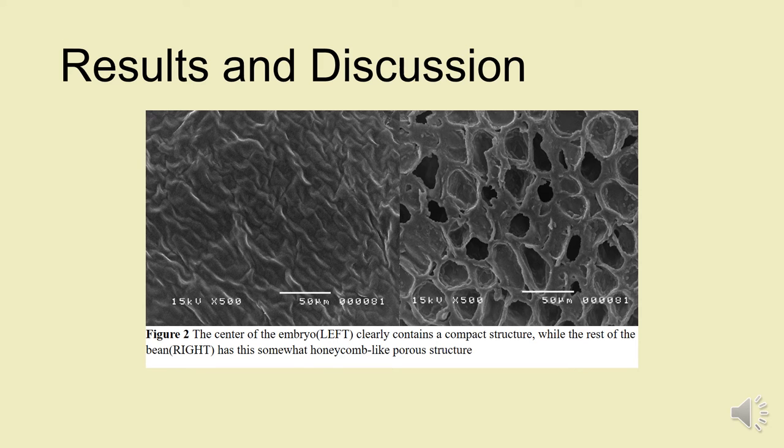Here's a side-by-side comparison of the embryo on the left versus the rest of the bean on the right. As you can see, the embryo has a very solid, tight structure, wherein it's a solid mass as compared to the rest of the bean, which is more of a honeycomb-like structure, a porous structure. Looking at this, this could be the reason why they grind up differently because they have different microstructures.